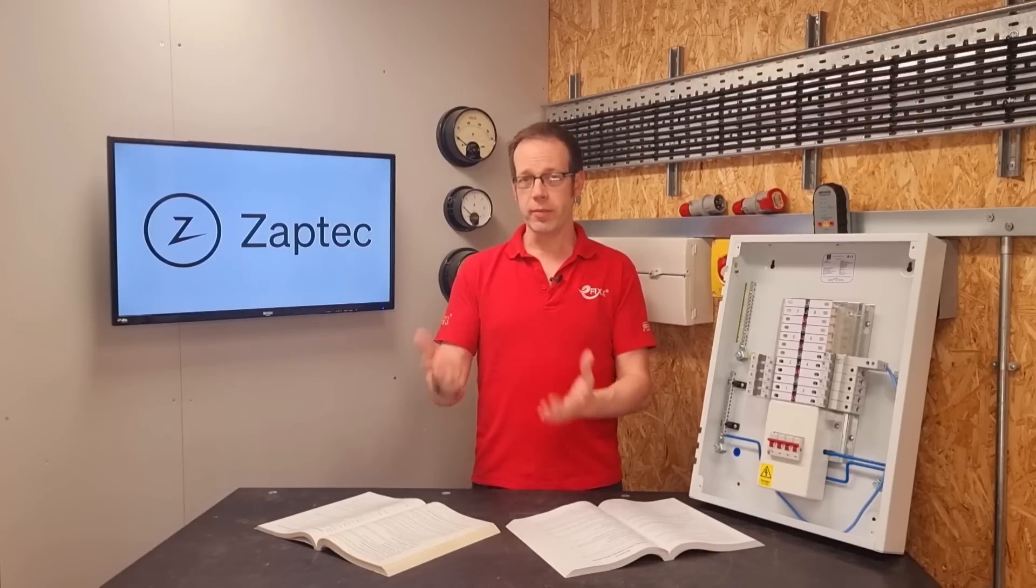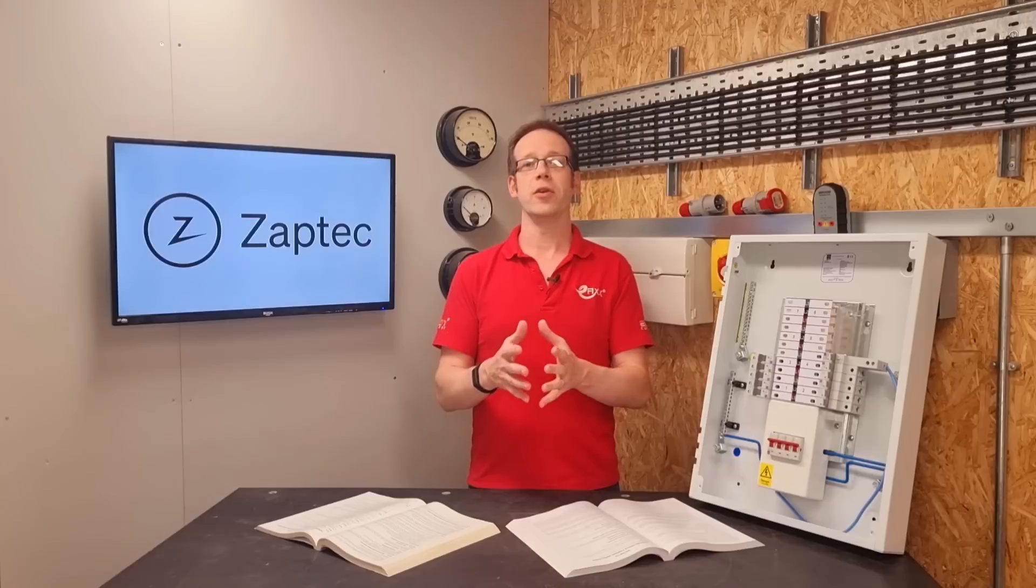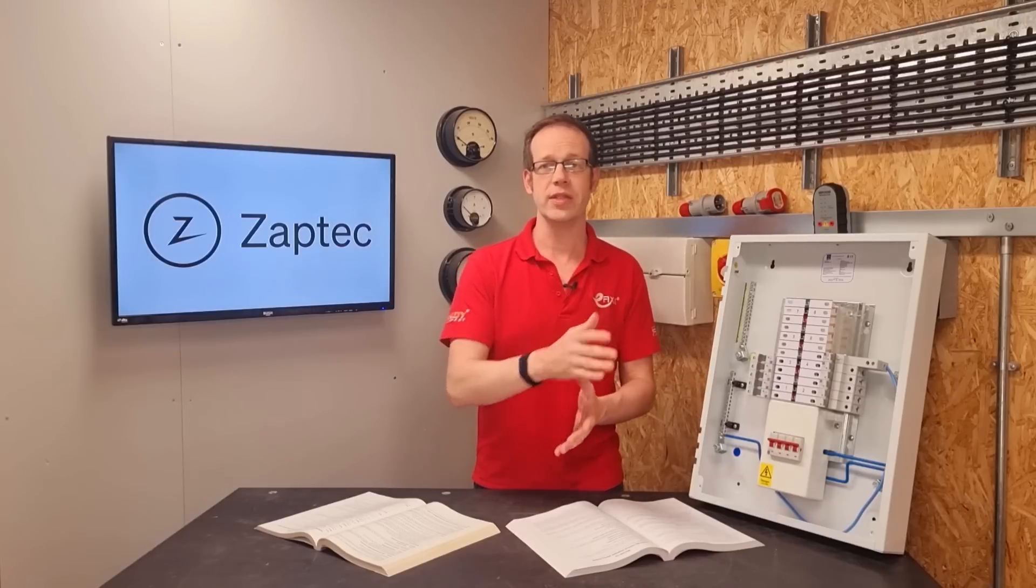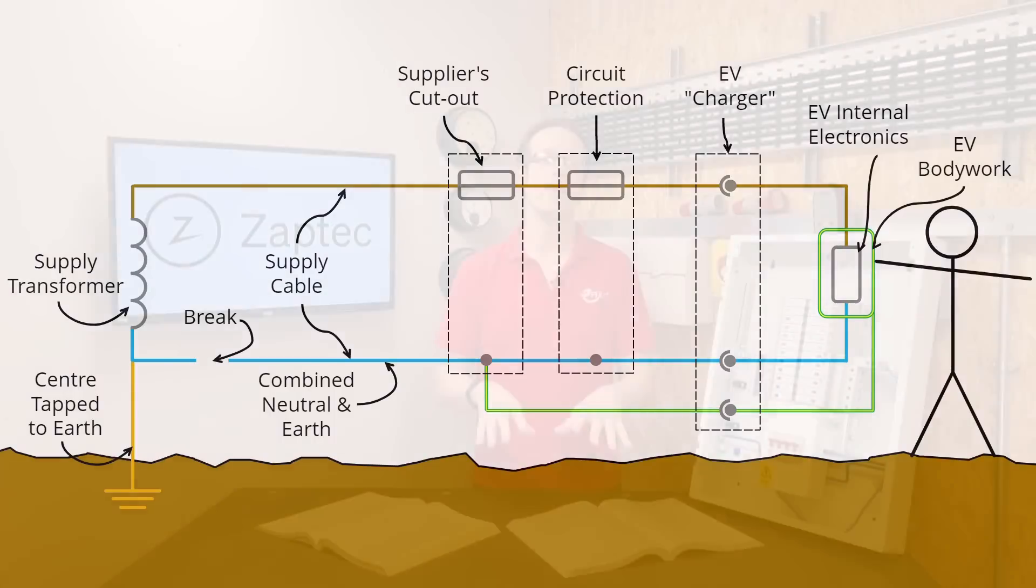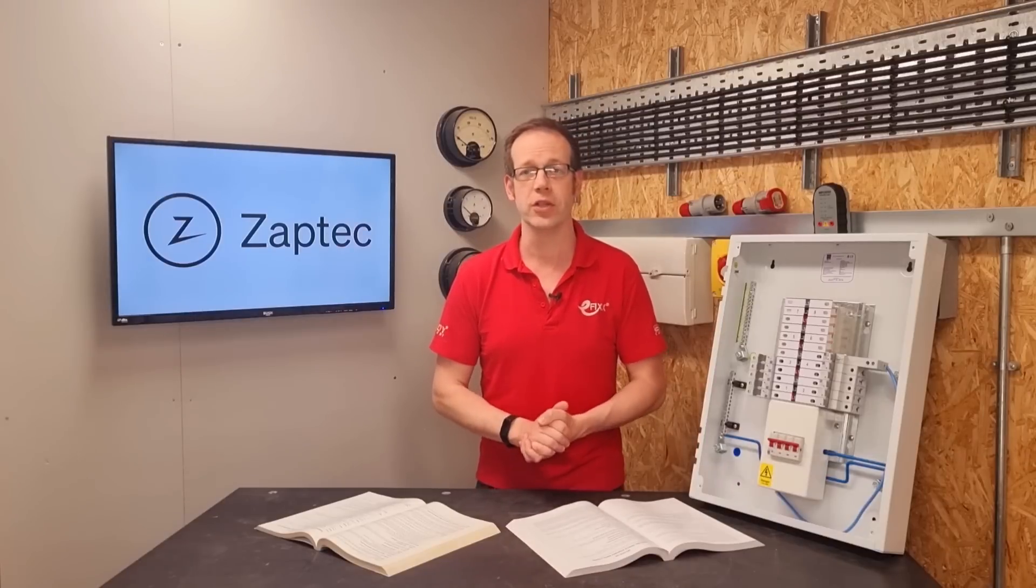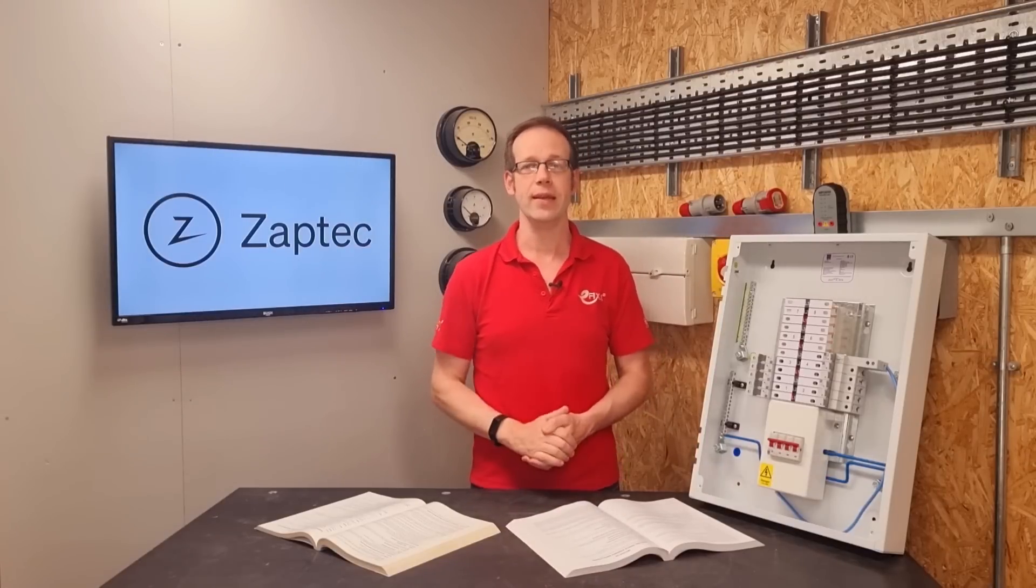Well remember the problem occurs when the combined neutral and earth conductor into the installation loses its connection and the current is looking for that route out, meaning that the voltage between the bodywork of the car and the literal earth was likely to go well above 70 volts, which is the point at which the voltage would become potentially lethal in this situation.